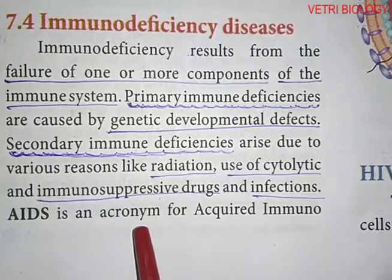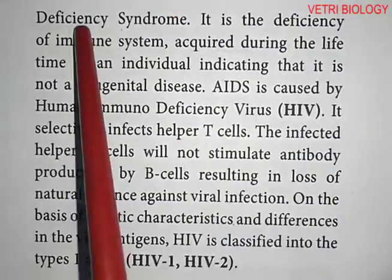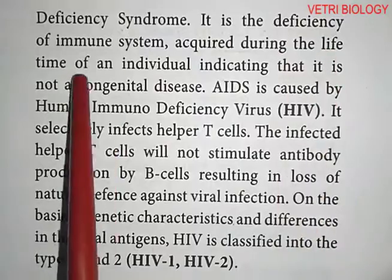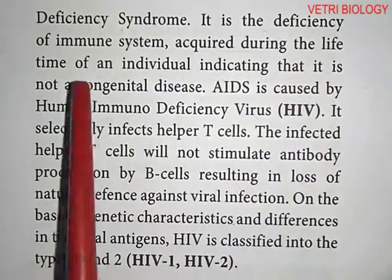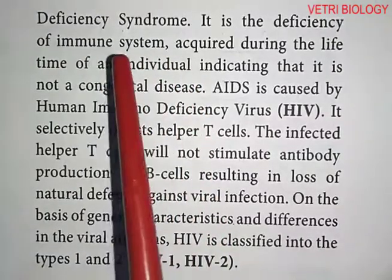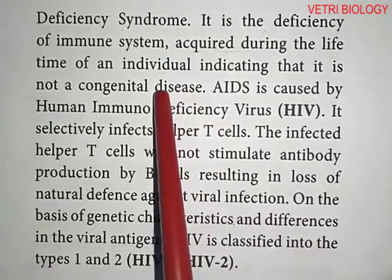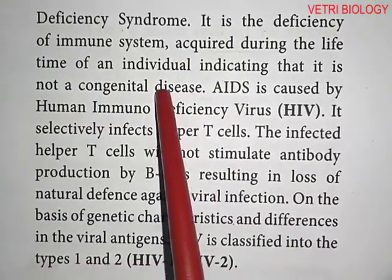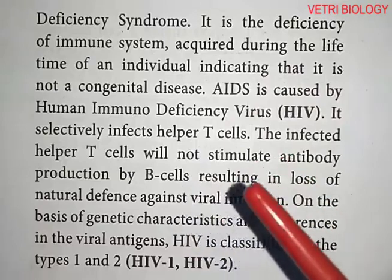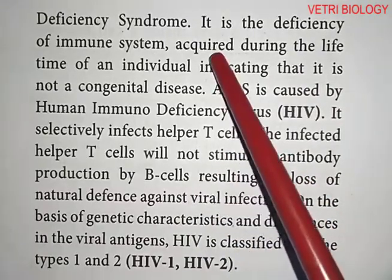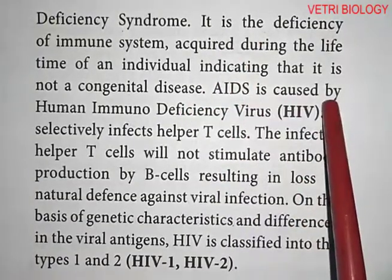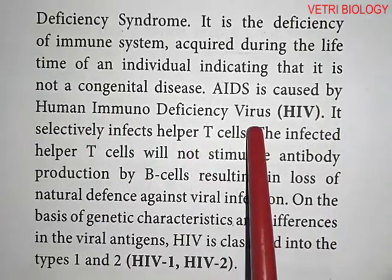Secondary immunodeficiency is the deficiency of the immune system acquired during the lifetime of an individual, indicating that it is not a congenital disease — that is, not a disease by birth. AIDS is caused by Human Immunodeficiency Virus, that is HIV. Acquired immunodeficiency is not congenital.